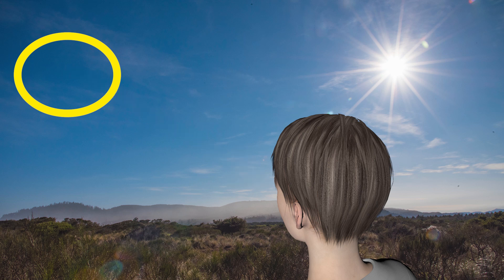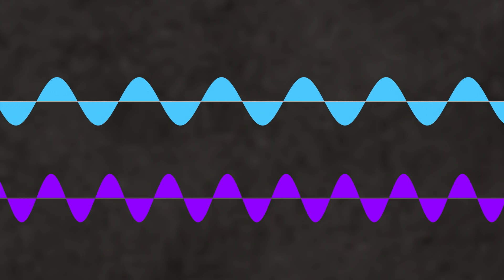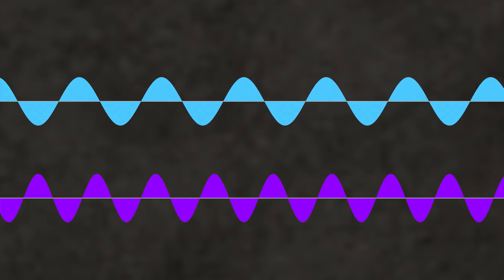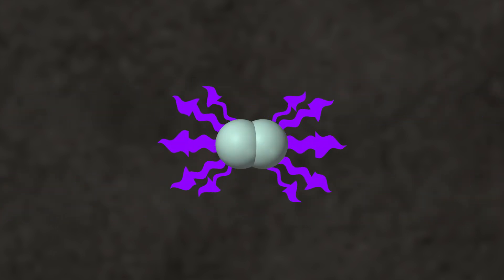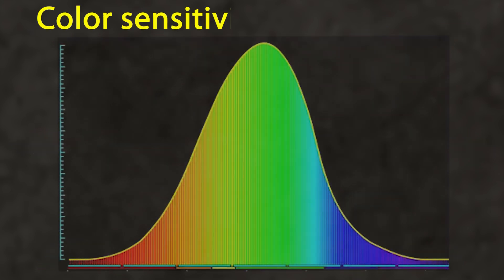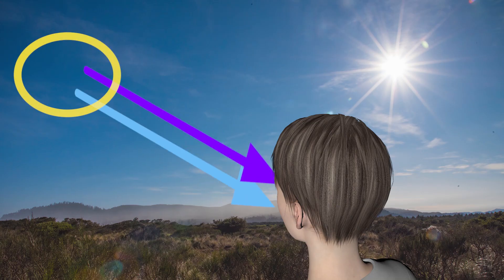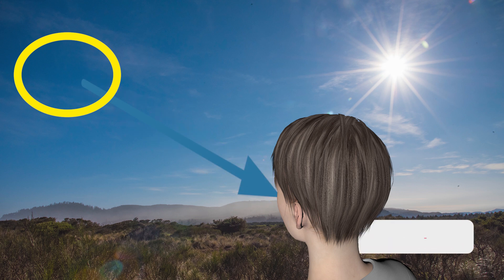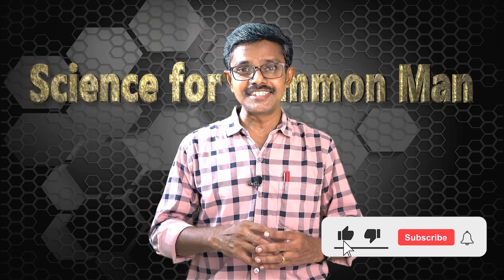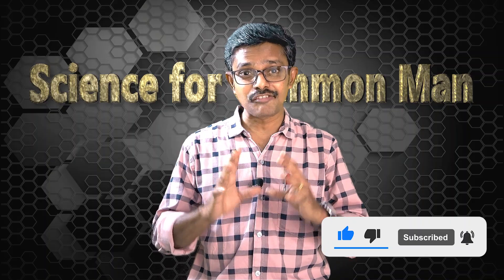But why not violet? Violet actually has a higher frequency or rate of oscillation compared to blue, and yes, violet is also scattered along with blue. However, the human eye is not as sensitive to violet light as it is to blue light. So when both violet and blue are received, our color senses interpret the net color as blue. If our eyes were not partial to blue, we would have seen the sky as violet.